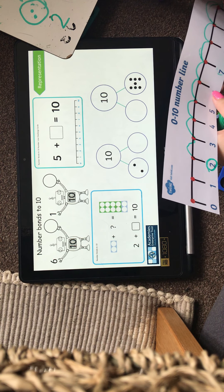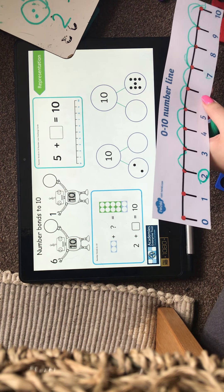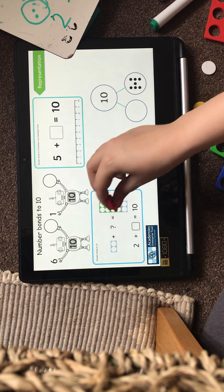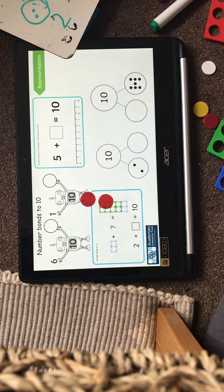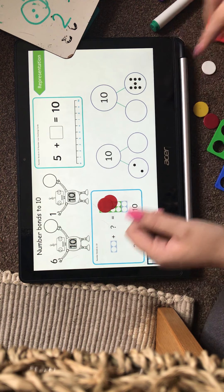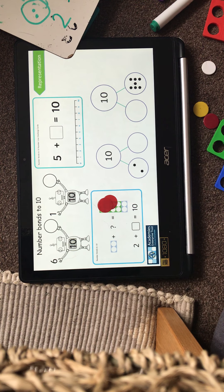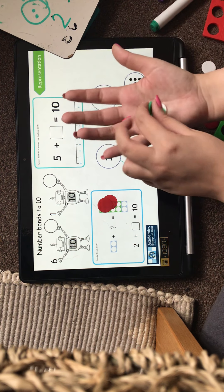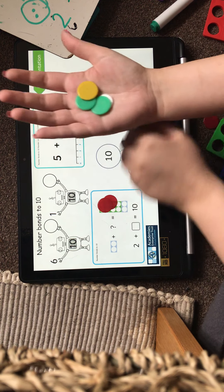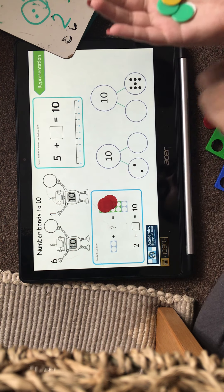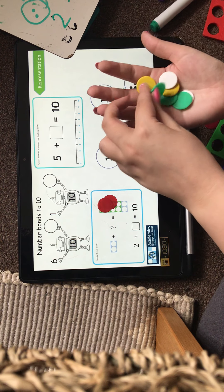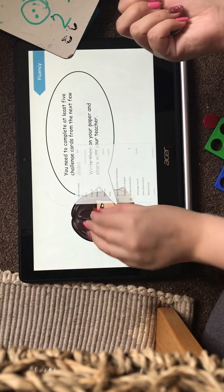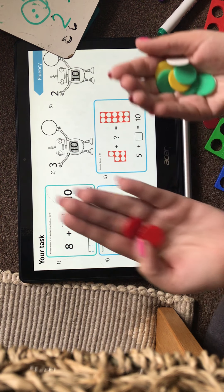So we think the answer is 8. So let's try it with my counters. So I've got 2 counters in this hand, and now I'm going to count to 8. And then let's see if when I add them together it's the same. 1, 2, 3, 4, 5, 6, 7, 8. So I've got 8 in this hand, and 2 in this hand.